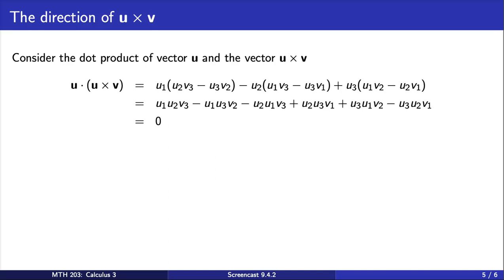If we dot product the vector u with the vector that results from the cross product of u cross v, we see that this gives us zero. Properties of the dot product here tell us that these two vectors must be orthogonal then.